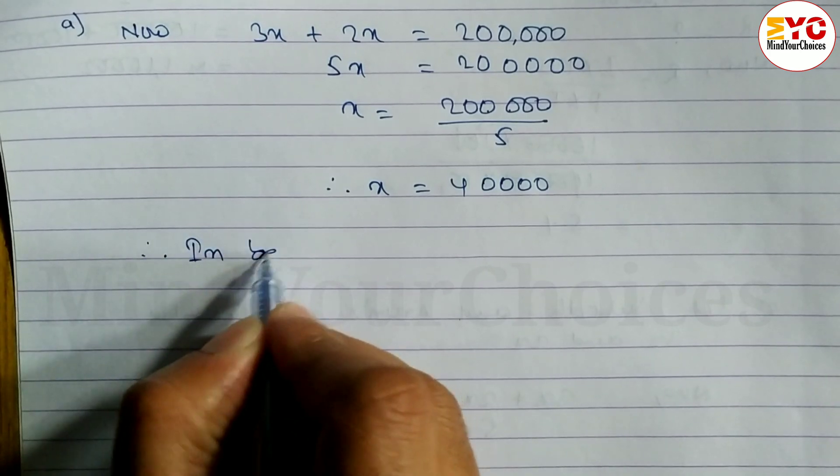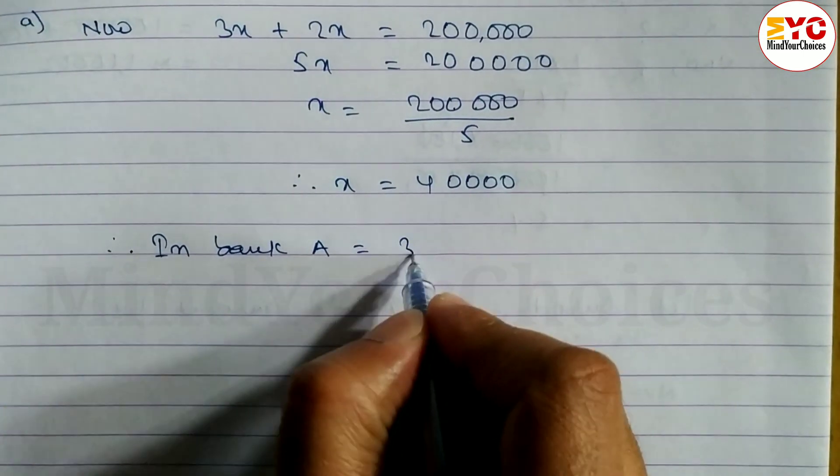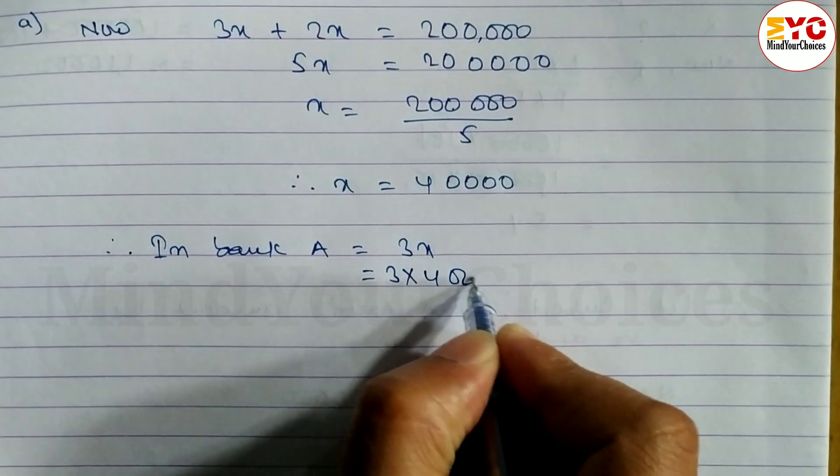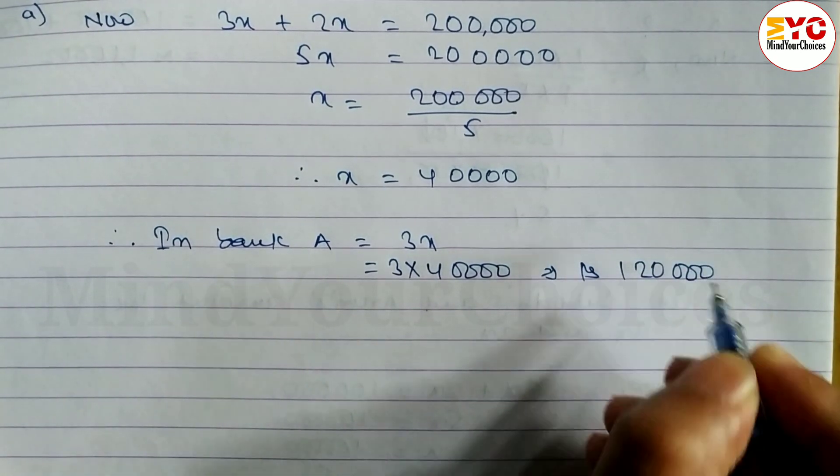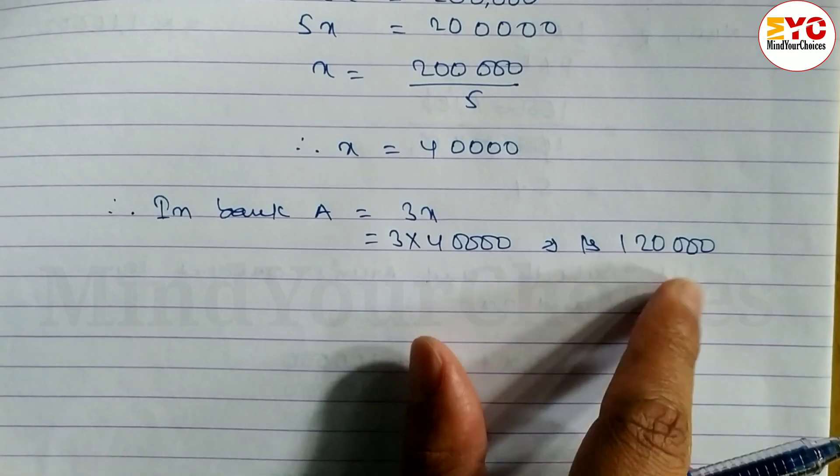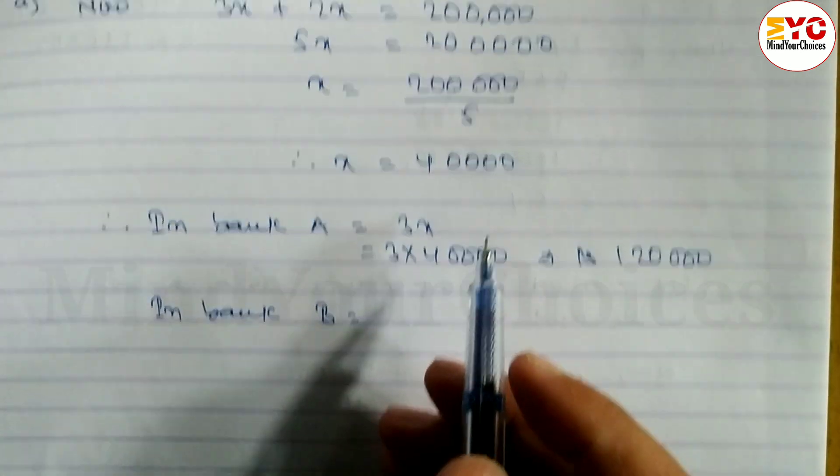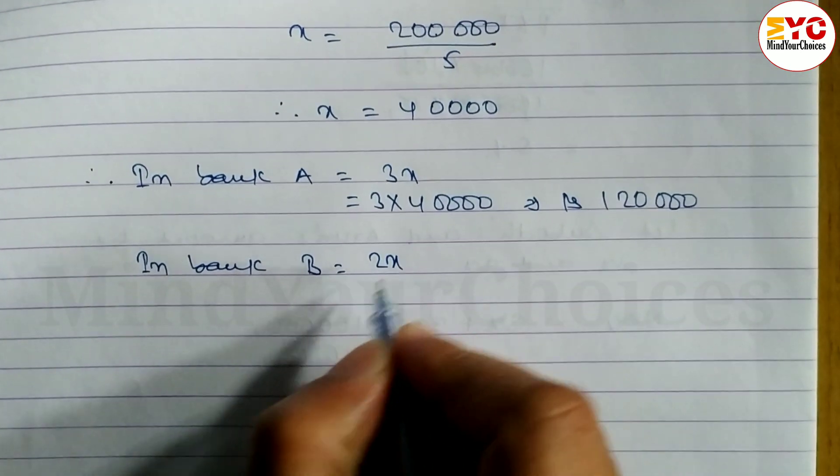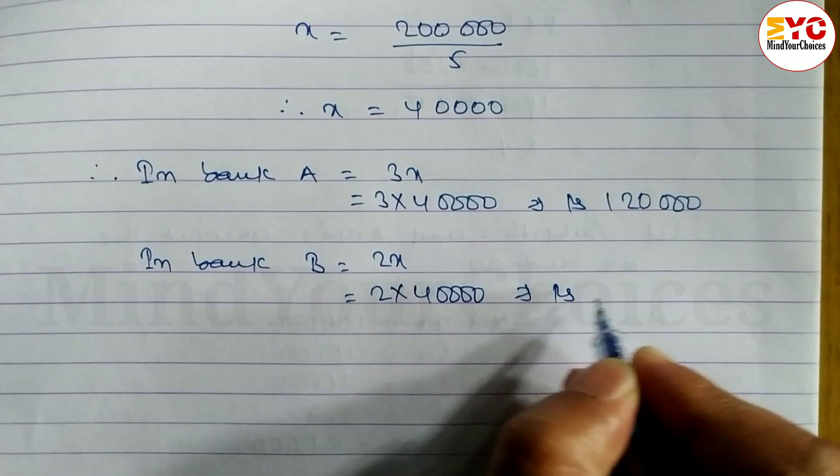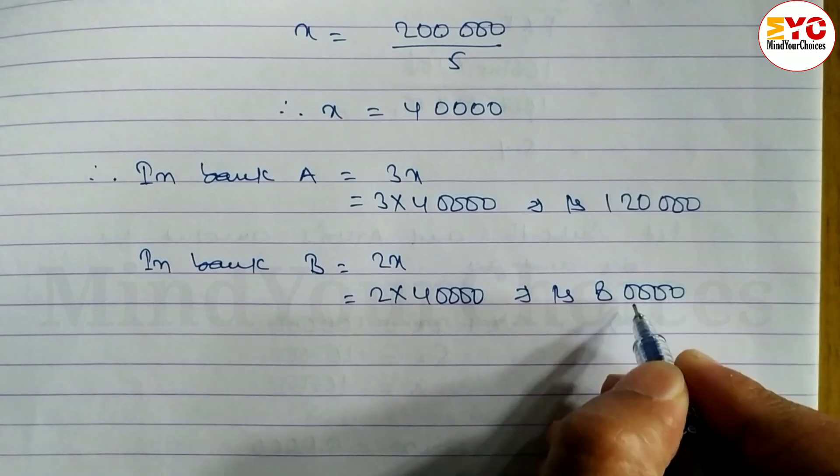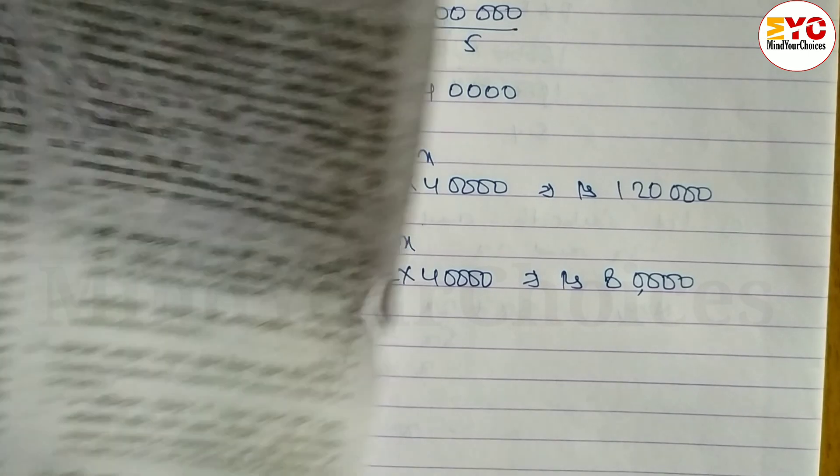Therefore, in bank A, how much will he deposit? 3x, so 3 into 40,000 equals rupees 1 lakh 20,000. Bank A maa he deposited 1 lakh 20,000. In bank B, how much did Sarkar deposit? 2x, so we can write 2 into 40,000 equals 80,000. Bank B maa he deposited 80,000.